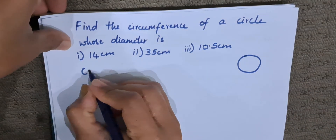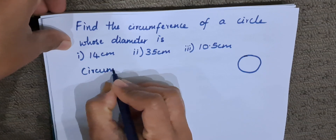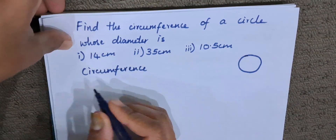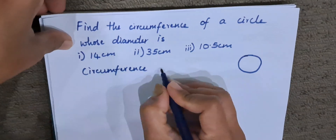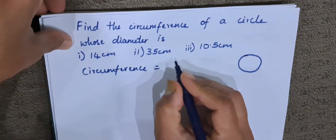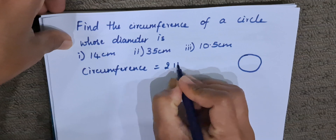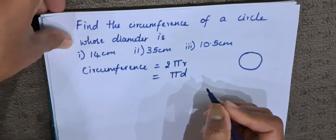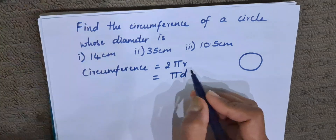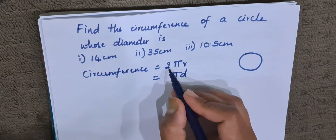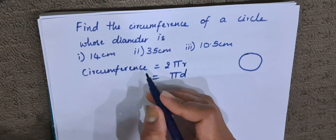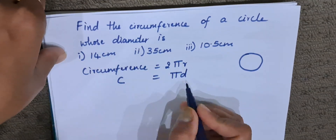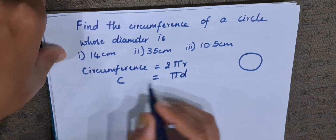We already have a formula to find the circumference of a circle, so these sums are very easy to solve. The circumference of a circle is 2πr or πd. We can use any of them. Since 2 times the radius equals the diameter, we have 2πr or πd. Here, since the diameter is given, we will use the formula: circumference = πd.